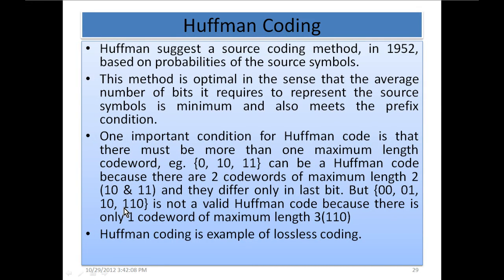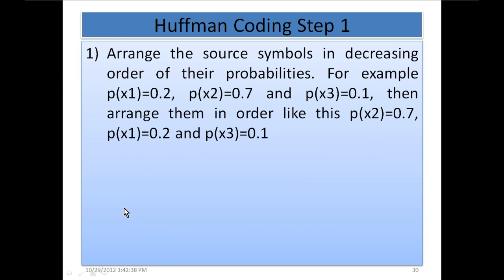Huffman coding is an example of lossless coding. The very first step in Huffman coding is to arrange the source symbols in decreasing order of their probabilities. For example, if p(x1)=0.2, p(x2)=0.7, and p(x3)=0.1, then arrange them so that x2=0.7 is on top, then x1=0.2, and x3=0.1 at the bottom — highest probability first, lowest at the bottom.